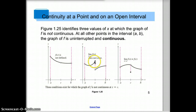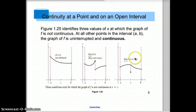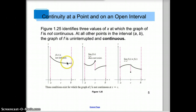Here, the limit does not exist at all, and the graph is discontinuous. In another case, the limit exists — it's the y-value at the hole — but the limit does not equal the actual y-value; the actual y-value is somewhere else. So this is discontinuous. All three graphs are discontinuous at c.